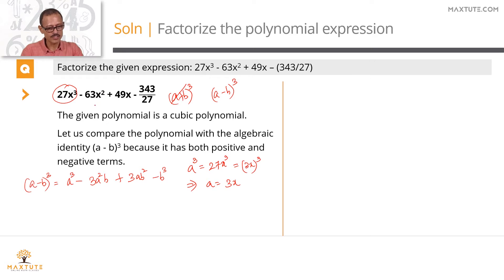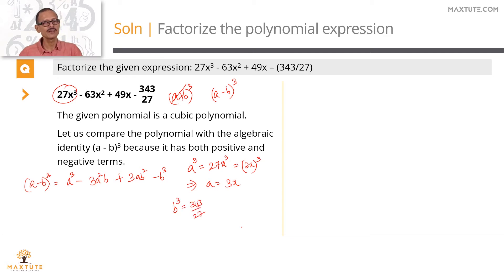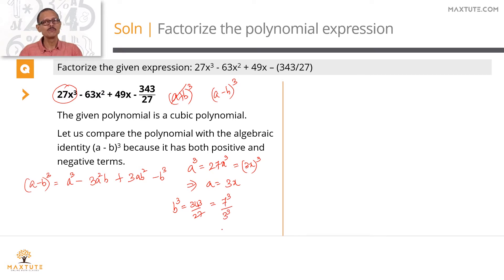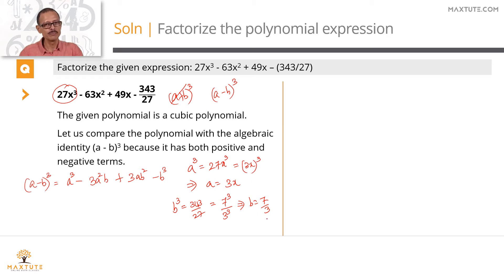This term contains an x², which means that 3a²b will contain that x². If a = 3x, there's going to be an x² term here and an x term here. This is likely to be our b³ term. So b³ = 343/27. Is 343 the cube of something? Yes, it's the cube of 7. So 343 = 7³. 27 we know is 3³. So b³ = 7³/3³, which means we can deduce b = 7/3. So a = 3x, b = 7/3.